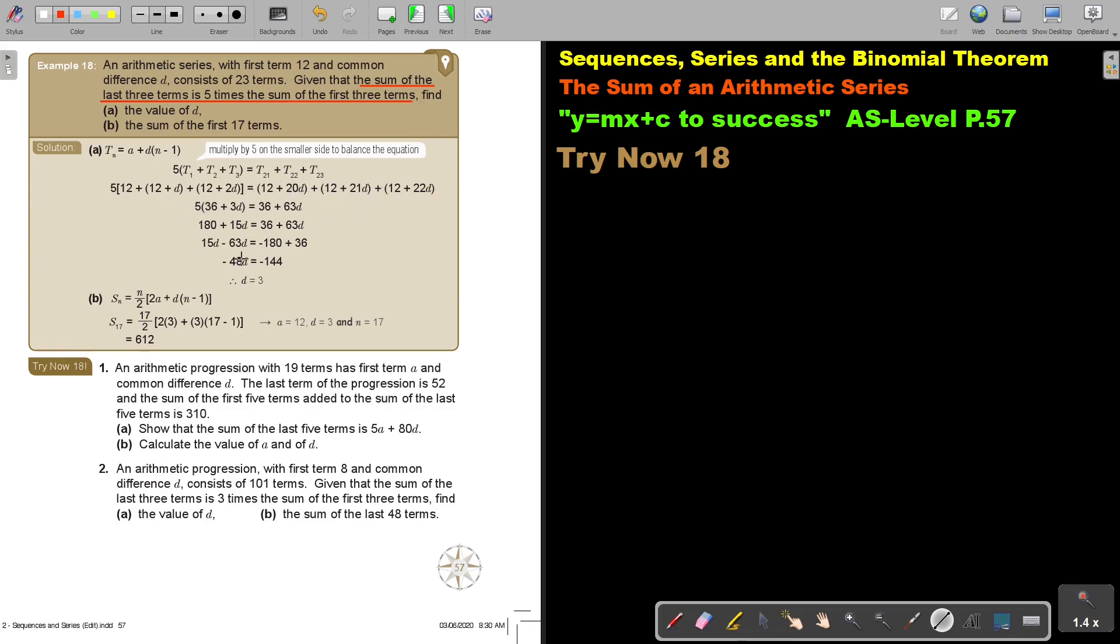Now I just simplify this and I get that my value of D is 3. And then the sum of the value of D, the sum of the first 17 terms. So I just substitute the values. There is just a printing mistake. Can I just show you the value of A? Can you remember? The value of A where the first term is 12. There must just be a 12. The answer is correct.